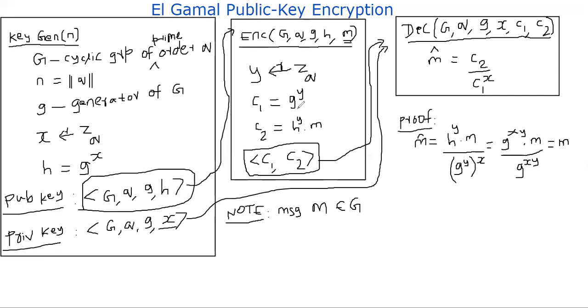Therefore, h power Y is a uniformly chosen element in the group, so you're multiplying a uniformly chosen element with M. That means C2 itself is a uniformly chosen element from the group. That means C2 is not easy to distinguish from a random group element. Therefore, C2 is argued to not leak information about M. That's the reason why this is considered secure.